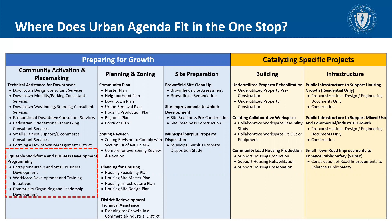This development framework — the development continuum — represents a life cycle of major community development projects from initial community visioning to final construction. Each development continuum category is made up of multiple project types, shown in bold on the screen. Urban Agenda covers the equitable workforce and business development programming category.